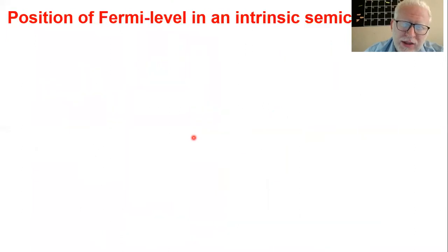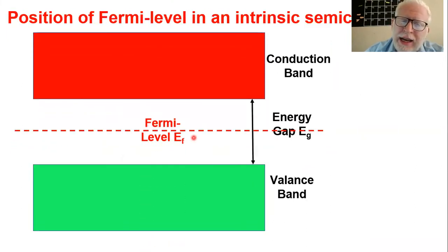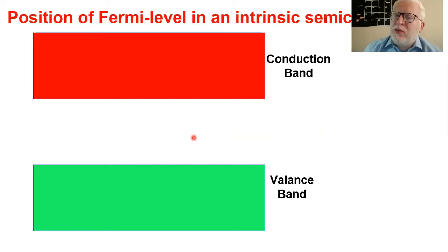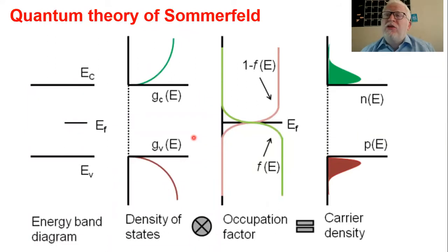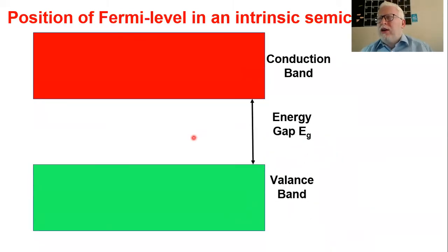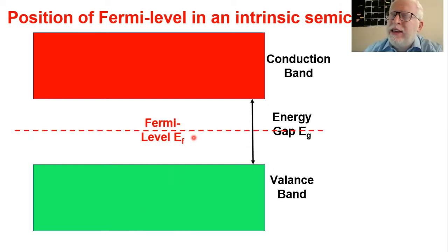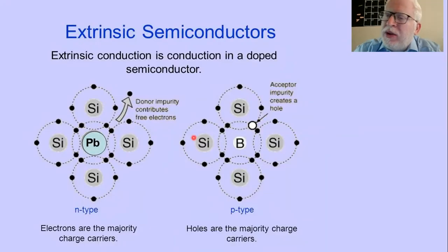Now, what about the Fermi level? The Fermi level is an indicator which indicates the ratio between electrons and holes. Whenever we have an intrinsic semiconductor material where the number of electrons equals the number of holes, the indicator is typically in the middle. Now, how can we increase the number of electrons or holes? This is what we call the doping effect. In the previous slides, we were talking about the intrinsic semiconductor — a pure material without any impurities.